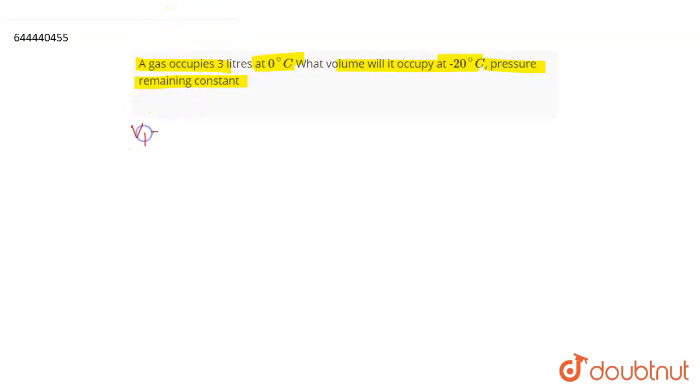The V1 volume given to you is three liters, and the temperature T1 given to you is zero degrees Celsius. Always, whenever we are doing calculations that involve temperature, it should be converted to Kelvin only. Then you will be able to achieve an answer. Otherwise, the entire calculation is going to be wrong. Temperatures are always taken in their SI units, which is in Kelvin.